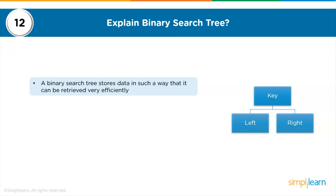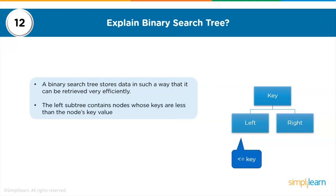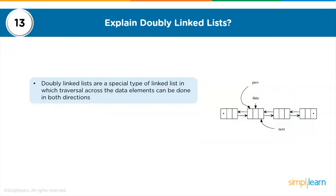The next question is: explain the binary search tree. A binary search tree stores data in such a way that it can be retrieved very efficiently. The left subtree contains nodes whose keys are less than the node's key value, while the right subtree contains nodes whose keys are greater than or equal to the node's key value.